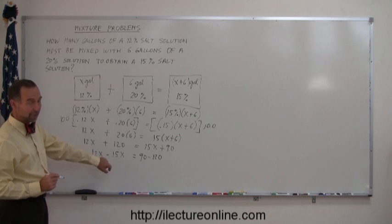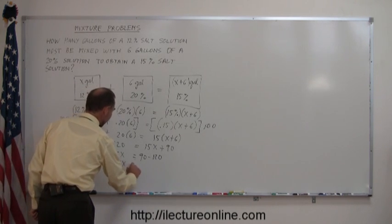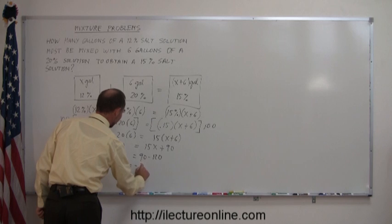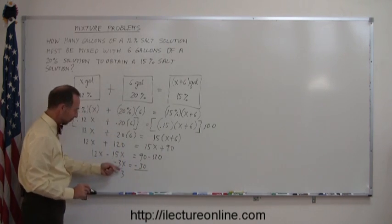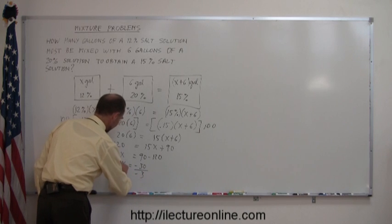12X minus 15X is minus 3X. 90 minus 120 is minus 30. Then divide both sides of the equation by the numerical coefficient of X. That cancels out. We have X equals 10.